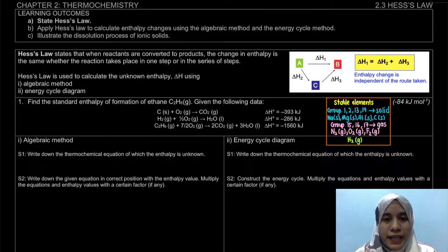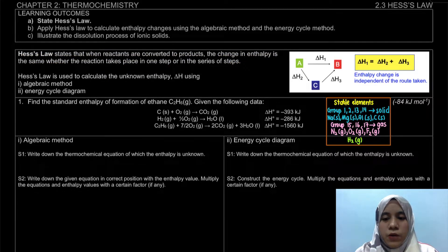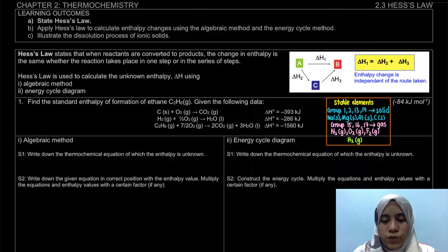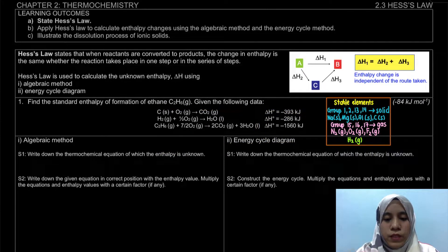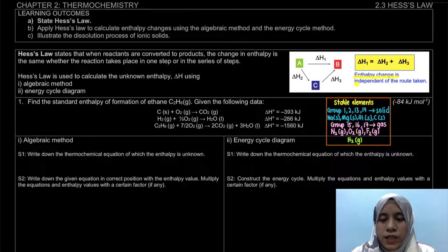So without further ado, let's look at Hess's Law. Hess's Law states that when reactants are converted to products, the change in enthalpy is the same whether the reaction takes place in one step or in a series of steps. From a given series of steps — for example H2 and H3 — when we add up all the steps, we do get our enthalpy change from reactant to product. That's why the enthalpy change is independent of the path taken.